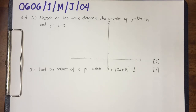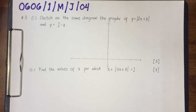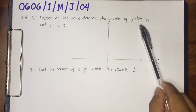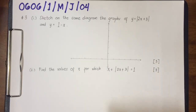The first question is: sketch on the same diagram the graphs of y equals the modulus of 2x plus 3, and y equals 1 minus x. In graphing a modulus of a linear equation, when we say modulus, it means everything should be on top of the x-axis, because modulus means everything is positive.